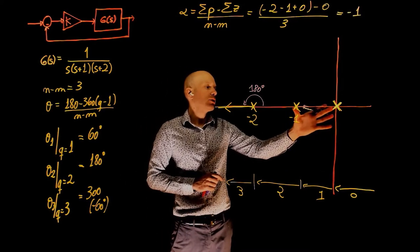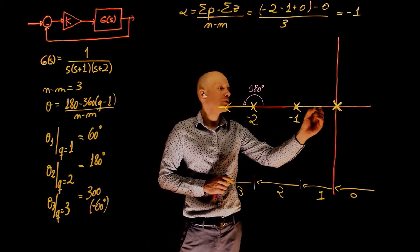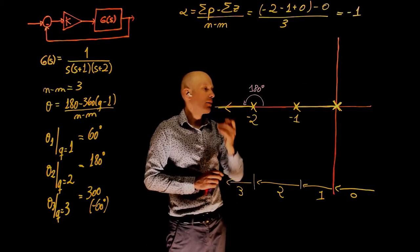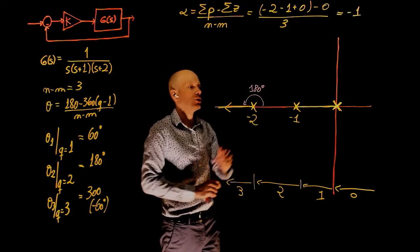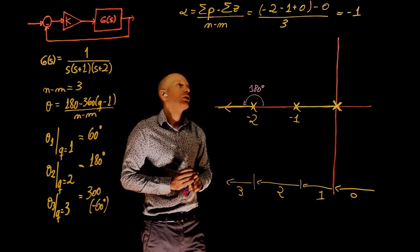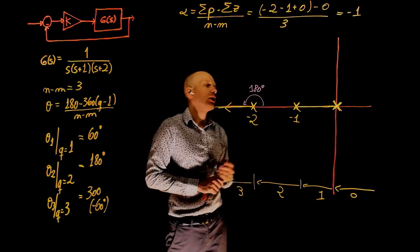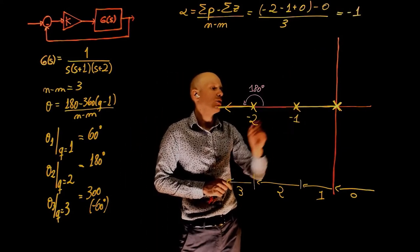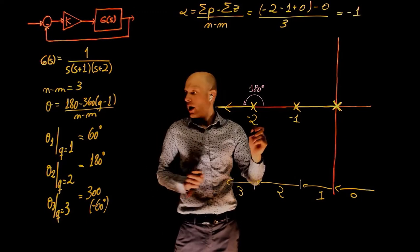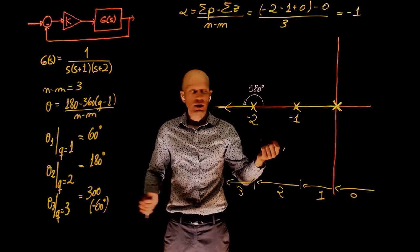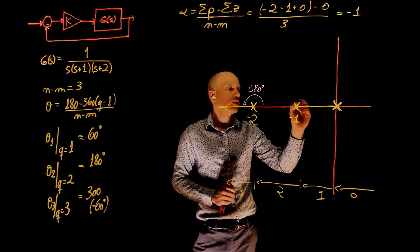Now the root locus also exists between these two poles, so they need to come together and break away from the real axis, become complex conjugates, and then tend to infinity. The location of the asymptote that we have is negative 1, so it is right on the pole here. And the two asymptotes that will take this pole to infinity are negative 60 and plus 60. That's the only possible solution.